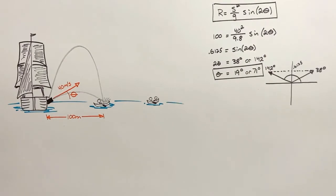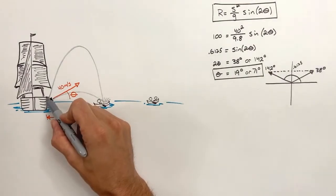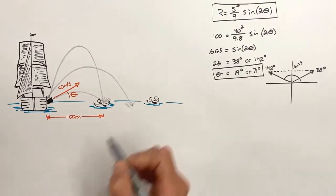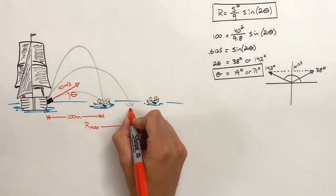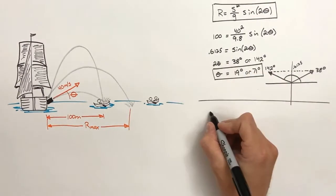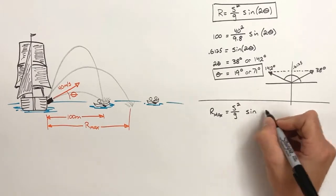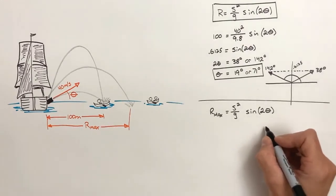Getting back to the storyline, there's another canoe trying to paddle away. While the ship's been firing on the first canoe, that other canoe has been getting farther and farther away. So now we're going to see just how far the cannons on board the ship can fire a shell. To do this, we're again going to look at the range equation and how it relates back to the unit circle.